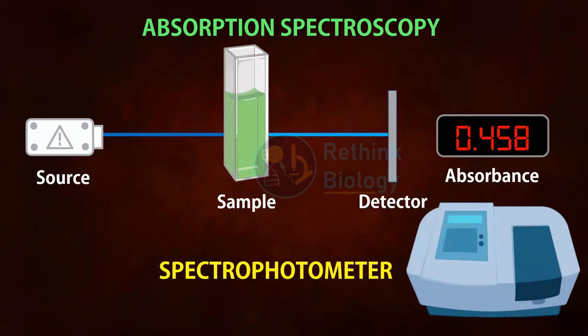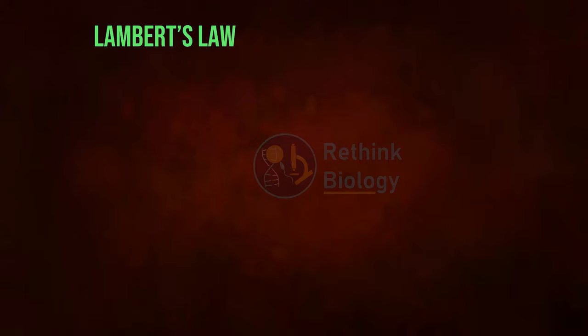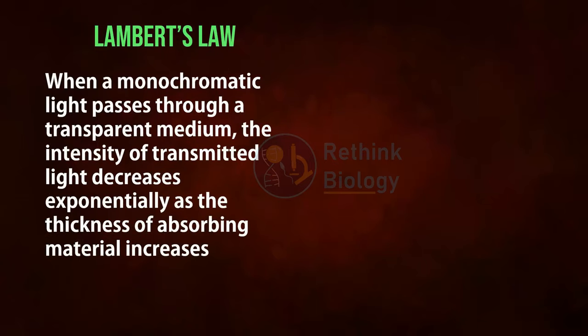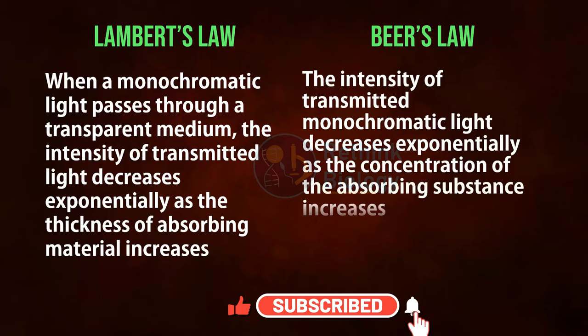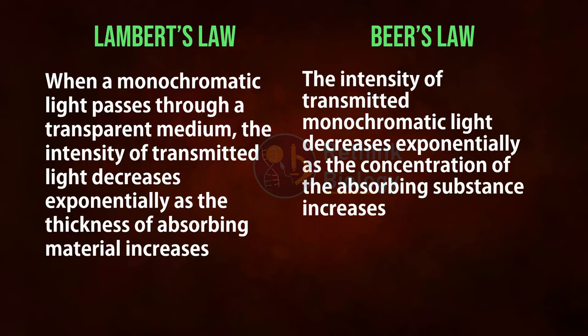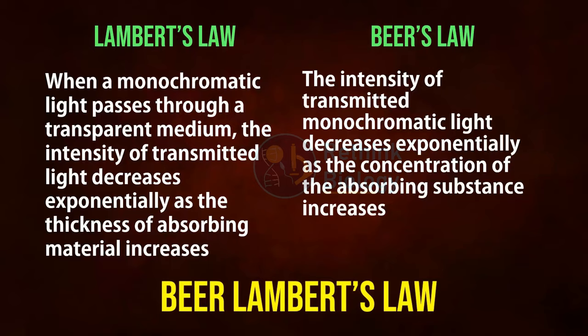Beer-Lambert's law is based on two different laws. Lambert's law states that when monochromatic light passes through a transparent medium, the intensity of transmitted light decreases exponentially as the thickness of the absorbing material increases. Beer's law states that the intensity of transmitted monochromatic light decreases exponentially as the concentration of the absorbing substance increases.